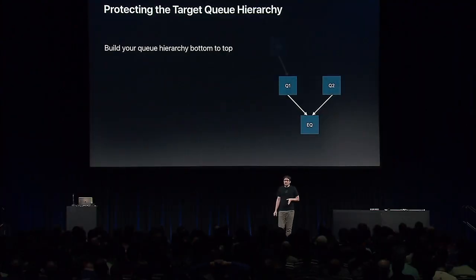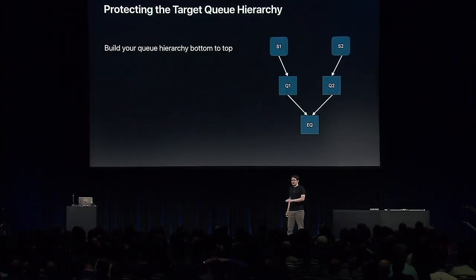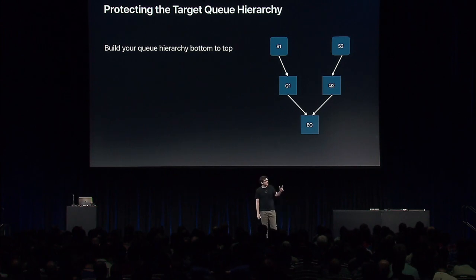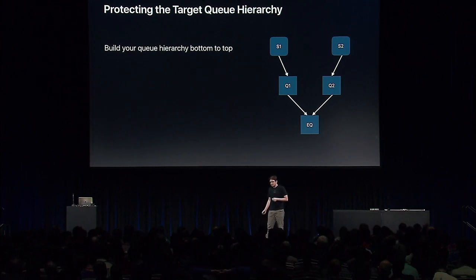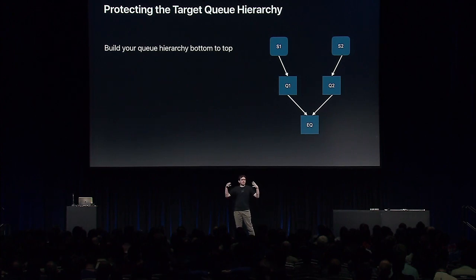Many of you probably never create a dispatch source directly — this is fine; you're probably using them through system frameworks. Each time a framework receives a dispatch queue from you because it asyncs notifications on your behalf, it has one of these sources behind the scenes. If you change the assumptions of the system, you break all these optimizations as well. The target queue hierarchy is essential and you have to protect it.